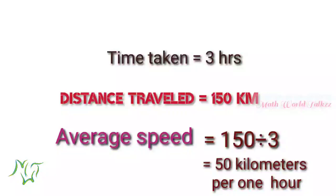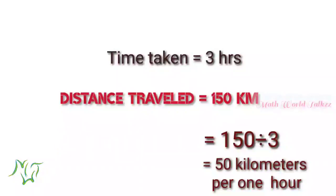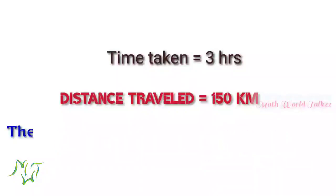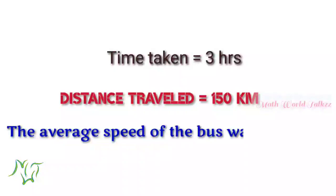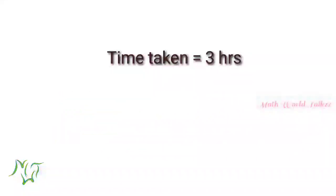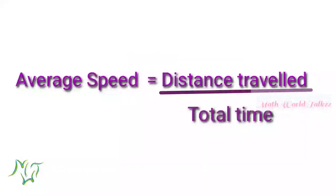So we can say that the average speed of the bus was 50 kilometers per hour. Average speed can be calculated by the formula: speed is equal to distance by time.